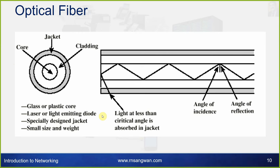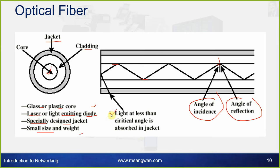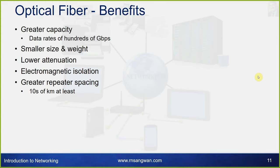Optical fiber: data is sent through a fiber cable using light. It works on the principle of reflective media — angle of incidence and angle of reflection. The structure from inside out is: core in the center, then cladding, then jacket. The glass or plastic core uses a laser or light-emitting diode to send the signal. Light at less than the critical angle is absorbed in the jacket; beyond that it is reflected and travels to the destination.